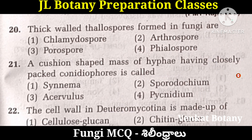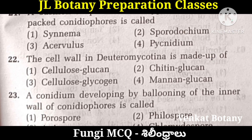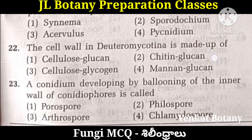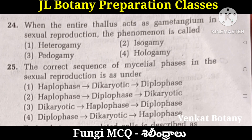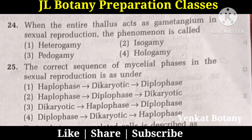A cushion-shaped mass of hyphae having closely packed conidiophores is called Acervulus. The cell wall in Deuteromycotina is made up of Chitin and glucan — the second option. A conidium developing by ballooning of the inner wall of conidiophores is called Porospore. When the entire thallus acts as gametangium in sexual reproduction, the phenomenon is called Hologamy.